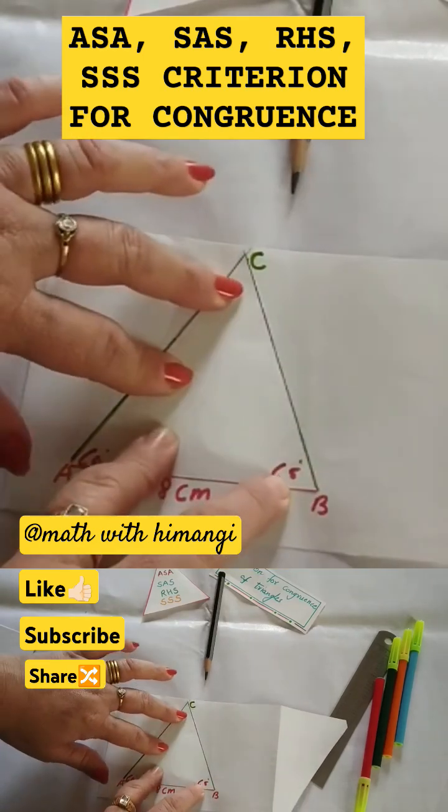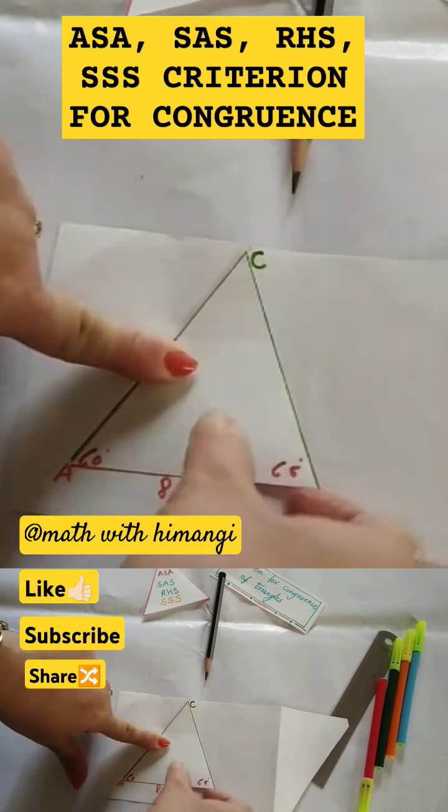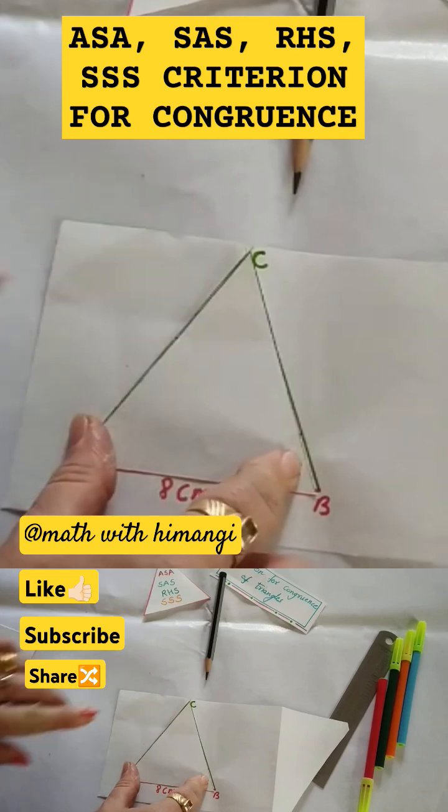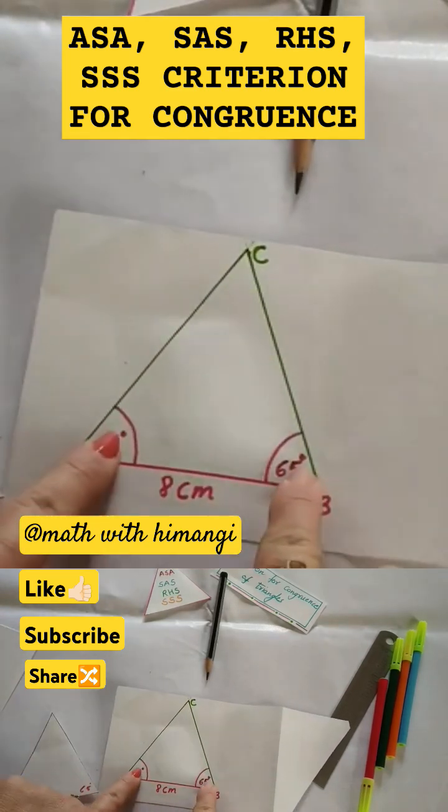that both the triangles cover each other exactly. Okay, you can see here this is the first triangle and this is another triangle already drawn. So with this activity I have shown that with the help of two